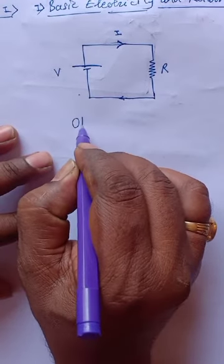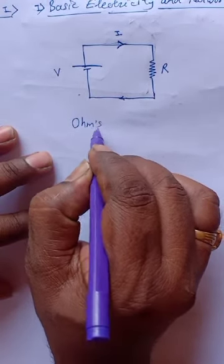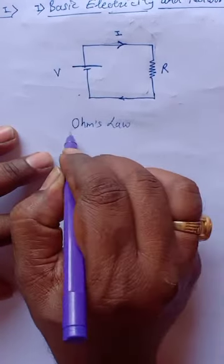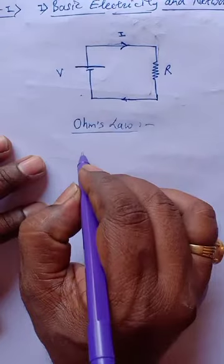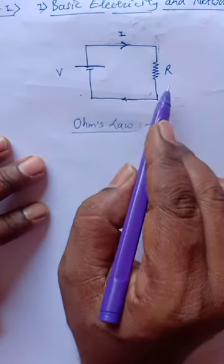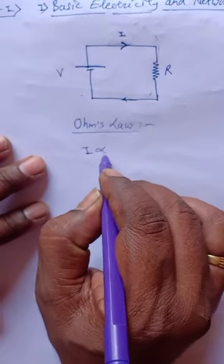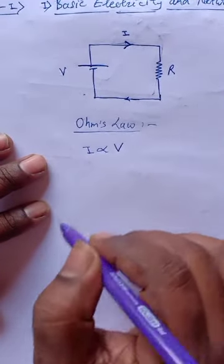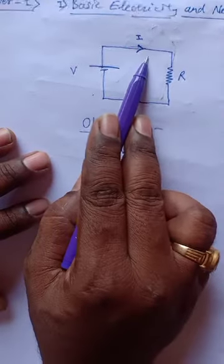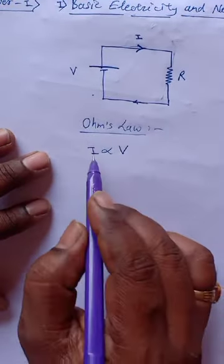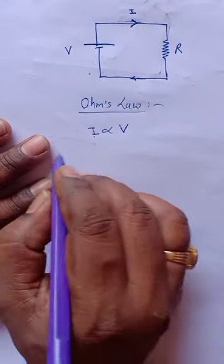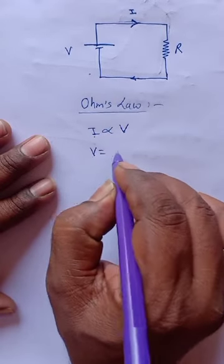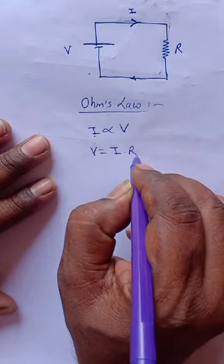Regarding these three components, there is a law known as Ohm's law. In this circuit, the current produced in the circuit is proportional to the applied voltage V. As we increase the voltage V, the current increases; as we decrease V, the current decreases. So I is directly proportional to V. We can write V equal to I into R.